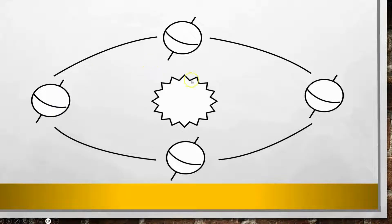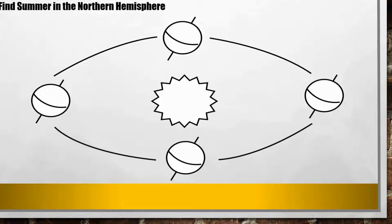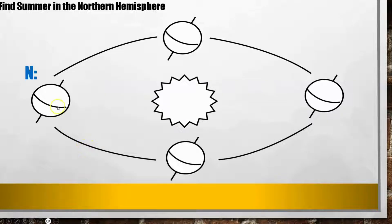On this diagram the axis is tilted to the right. The first thing you need to find is summer in the northern hemisphere — that's the easiest one. It's either going to be the one on the left or the one on the right. I'm looking for the one where the top is tilted towards the sun. This one has the top tilted towards the sun, so that's my northern hemisphere and this is my southern hemisphere. So right here, the top is tilted towards the sun — that's my summer in the northern hemisphere.